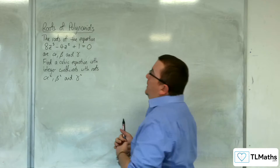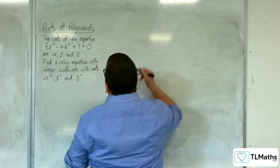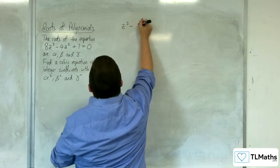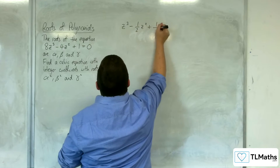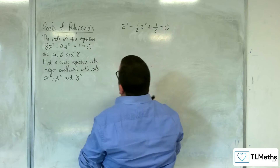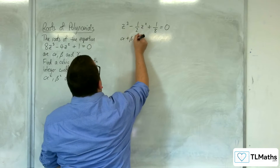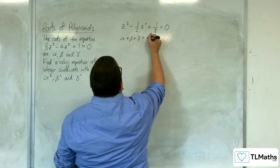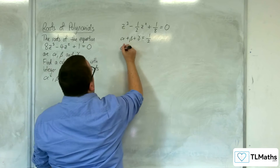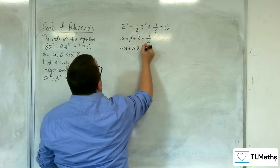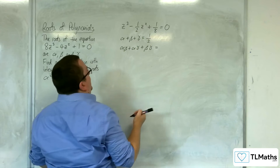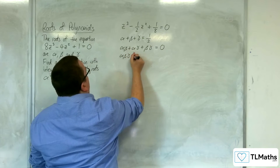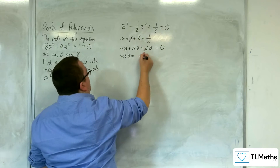First things first, we need to get the coefficient of z cubed to be 1, so divide through by 8. So we'll have z cubed minus one-half z squared plus one-eighth equals 0. So alpha plus beta plus gamma equals positive one-half. Then alpha beta plus alpha gamma plus beta gamma — the coefficient of z is 0, so that's 0. And alpha beta gamma equals negative one-eighth.